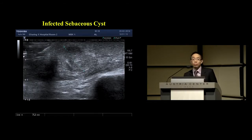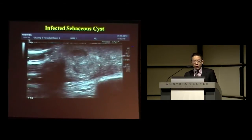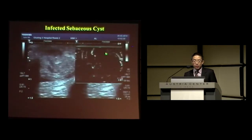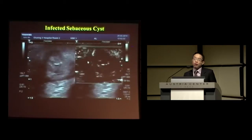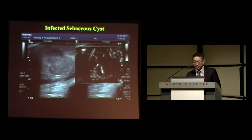Here is another example where SMI can be extremely useful: a patient with a collection within the skin, with some pointing to the dermal layer, looking like a sebaceous cyst. Is this infected? When you turn on SMI, you can see the soft tissues around it are markedly vascular, confirming that this sebaceous cyst is infected.